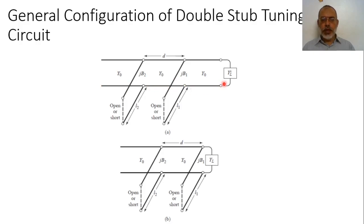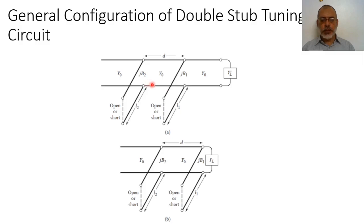This is the general configuration for the double stub tuning circuit. We have the load admittance Y-load connected at an arbitrary distance from the terminal of the tuning circuit. The tuning circuit is composed of a fixed transmission line section of distance D, with two stubs connected in shunt. The value D is constant, but the values L1 and L2 are variable.